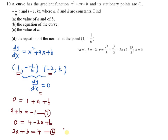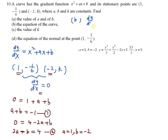By solving these two equations, you have a equal to 1, b equal to negative 2. So you already have the values for a and b. Therefore, you can write dy/dx as x squared plus x minus 2.